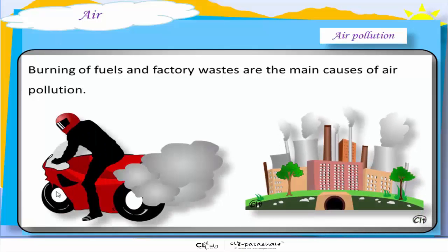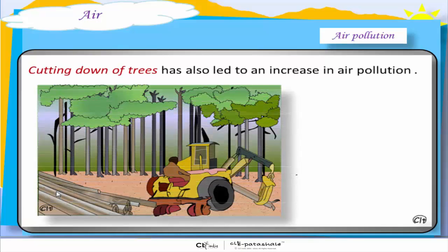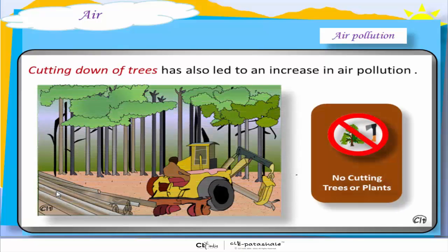Burning of fuels, mainly fossil fuels, and factory wastes are the main cause of air pollution. Our earth used to be much greener, but in the last hundred years, the cutting down of trees and the urbanization has also led to an increase in air pollution.